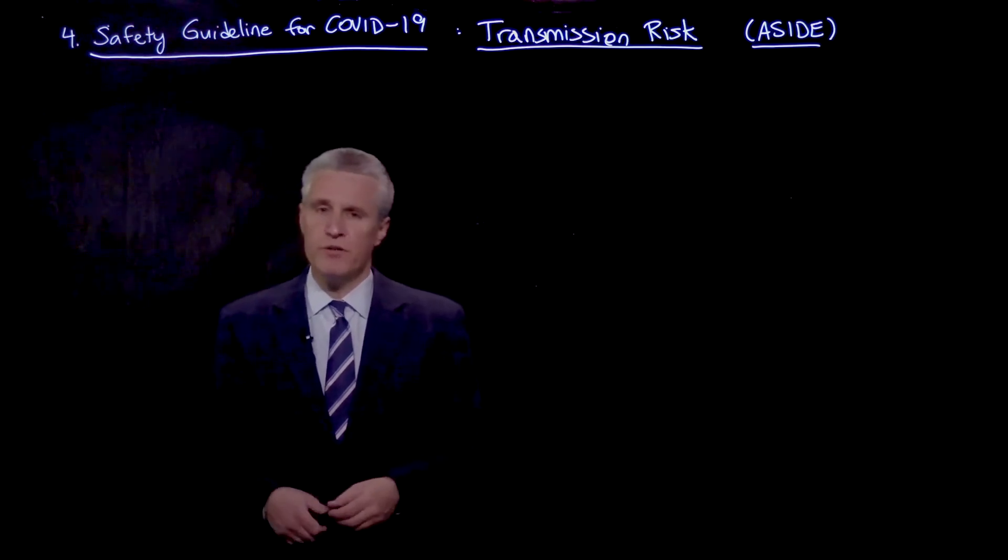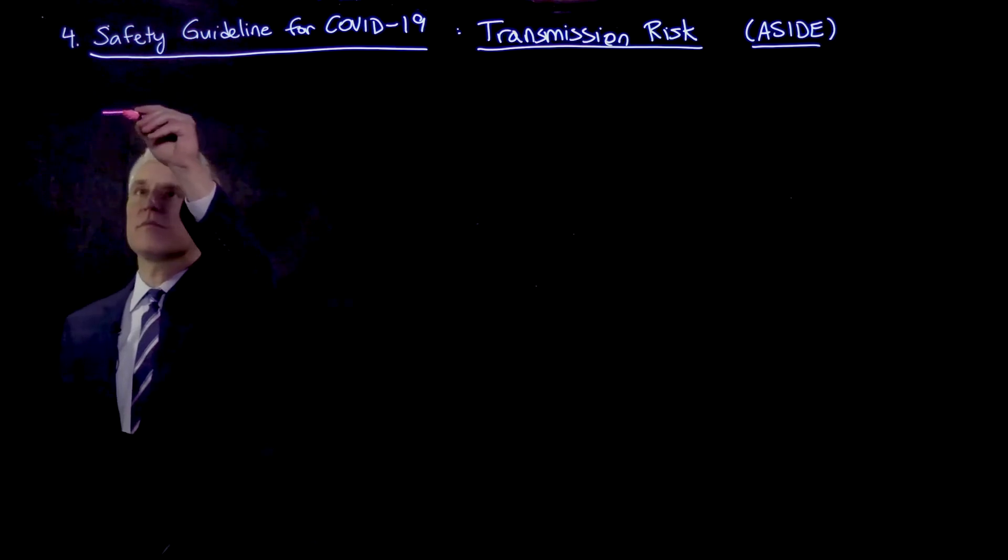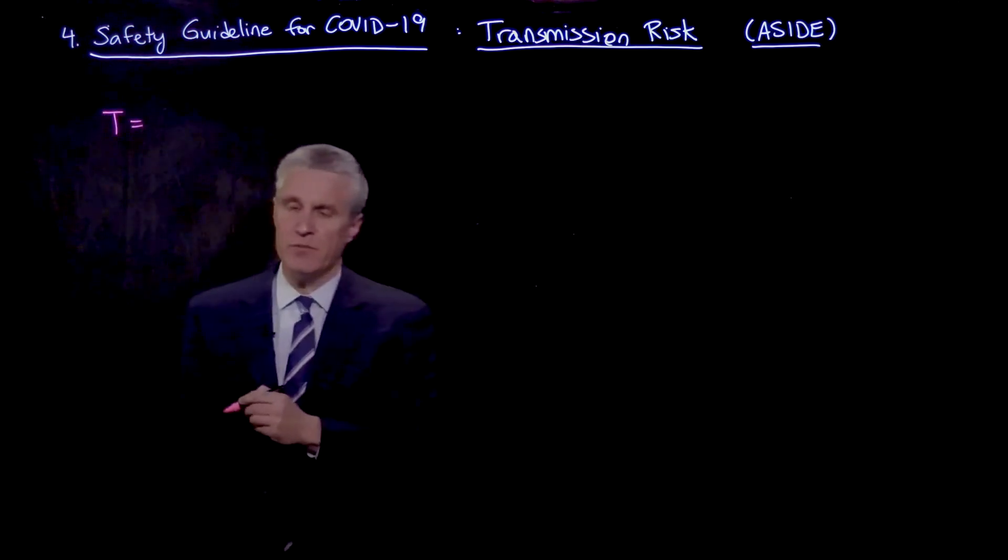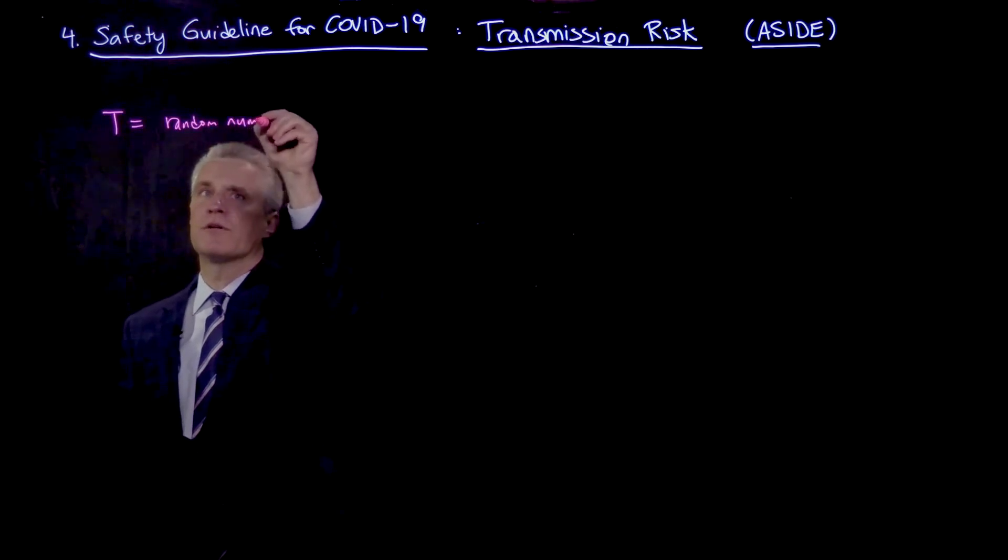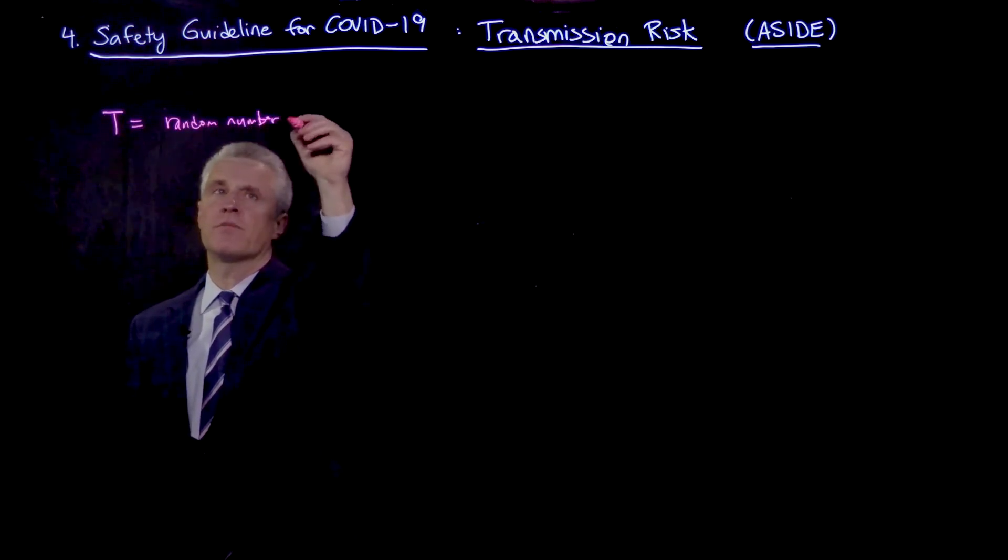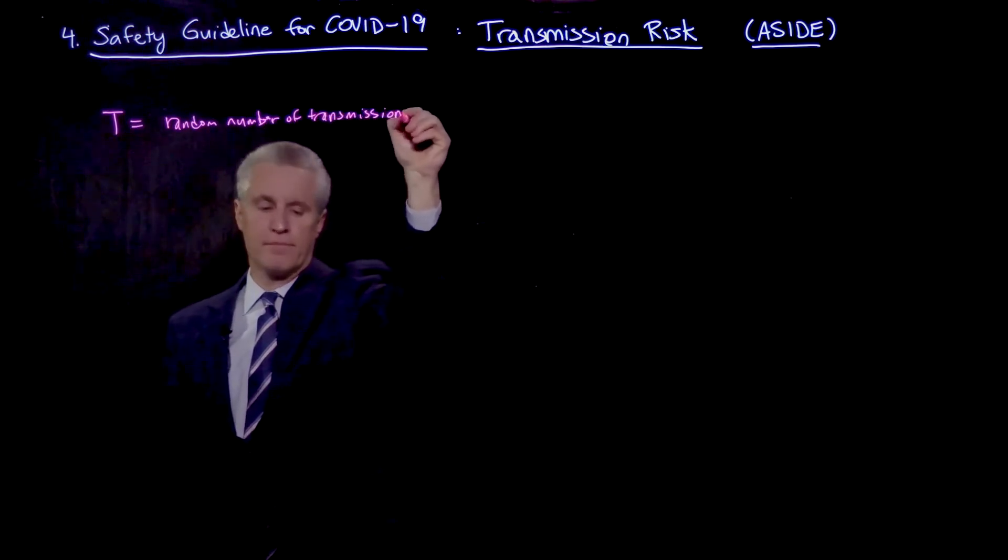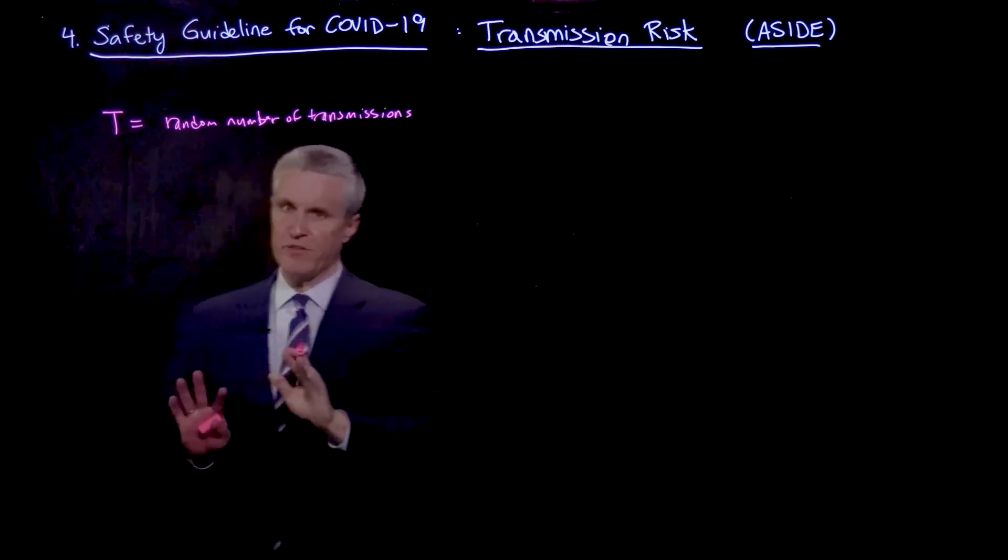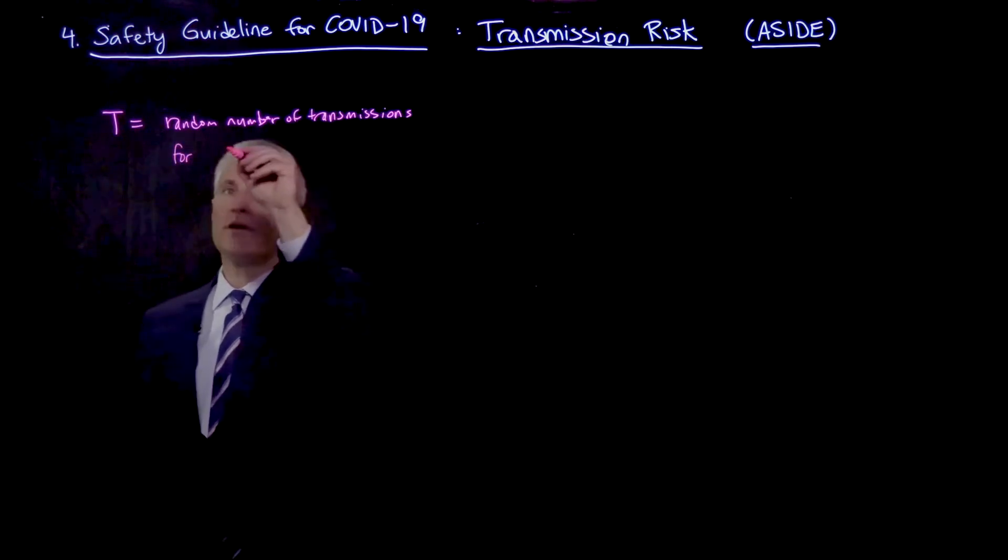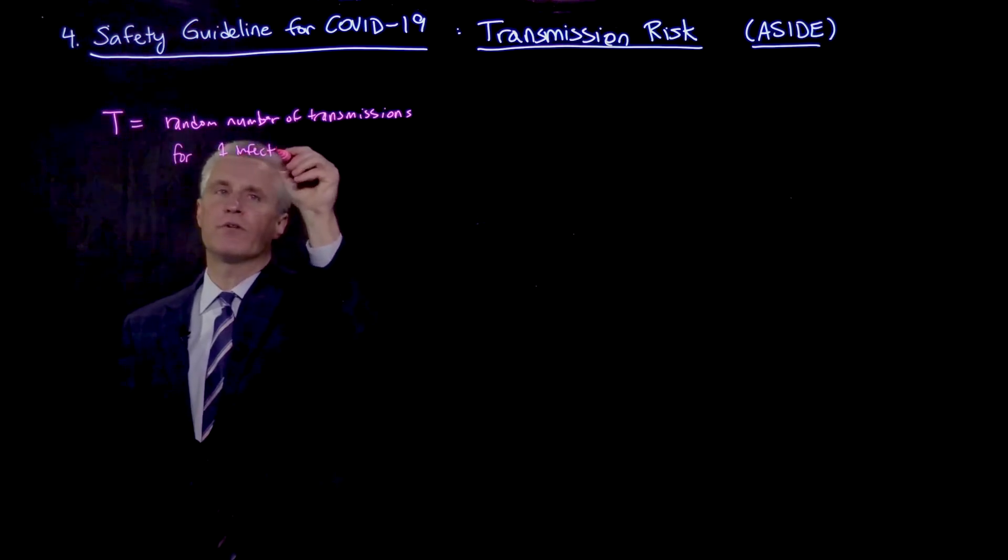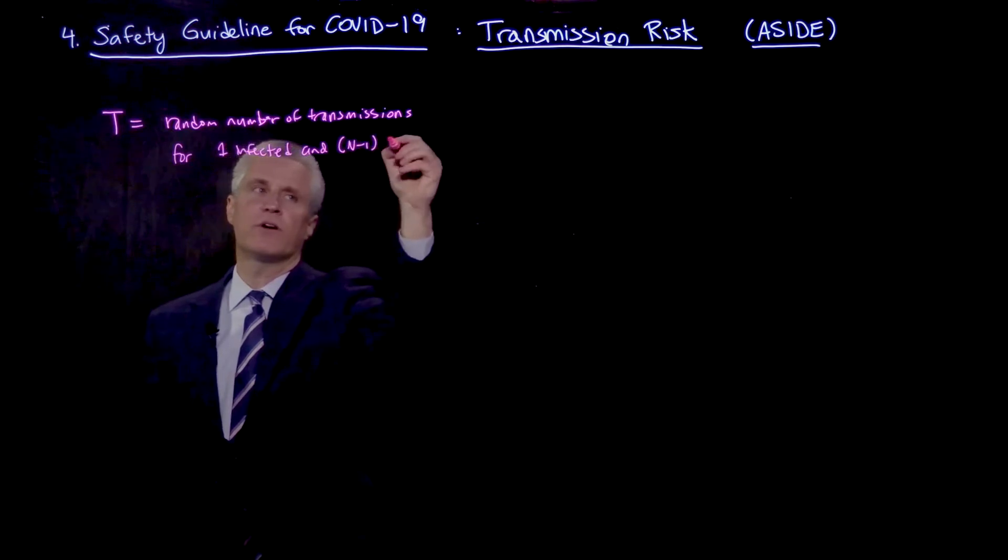When we might be more concerned about bounding the probability of a transmission, let's let a capital T be a random variable which describes the random number of transmissions that occur in the room. This is specifically for the case of one infector or infected person and n minus 1 susceptible.